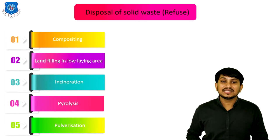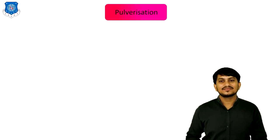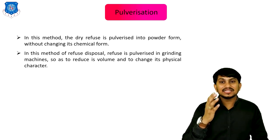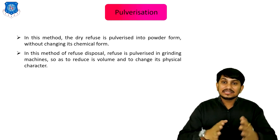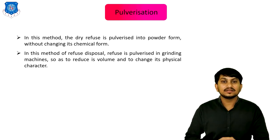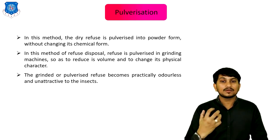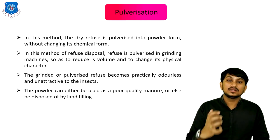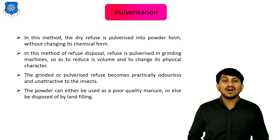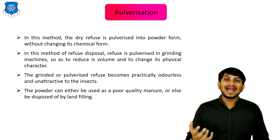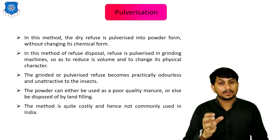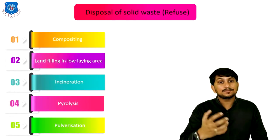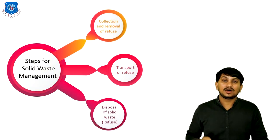The fifth method of disposal is pulverization. In this method, the dry refuse is pulverized into powder form without changing its chemical composition. Refuse is pulverized in grinding machines so as to reduce its volume and to change its physical characteristics. The ground and pulverized refuse becomes practically odorless and unattractive to various insects. The powder can either be used as a poor quality manure or fertilizer, or it can be disposed by landfill. The method is quite costly and has not been commonly used in India.